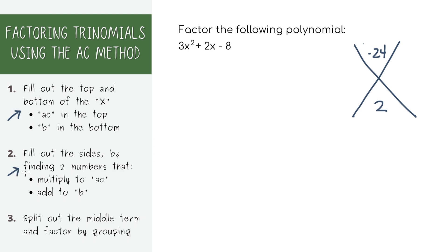Now for the two sides, we need to find two numbers that multiply to ac and add to b. In other words, we need to find two numbers that multiply to negative 24 and add to 2. If you can't think of it right away, you can start listing the factors of ac. You'll find that 6 and negative 4 is the only one that adds up to 2, so we'll put them here.